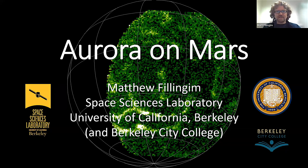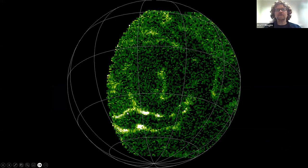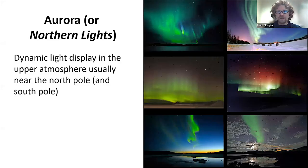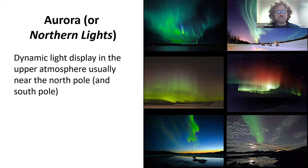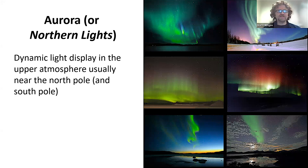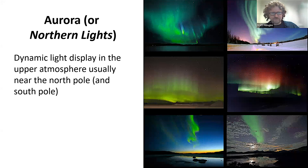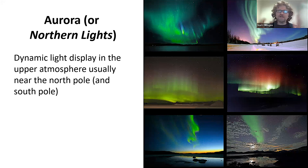I want to start with more than just Aurora on Mars, but Aurora in general, because maybe some people aren't familiar with that. Aurora, or what's sometimes called the Northern Lights, is a dynamic light display that's usually in the upper atmosphere, usually near the North Pole, also near the South Pole. These are pictures people have taken from the ground looking at the Aurora.